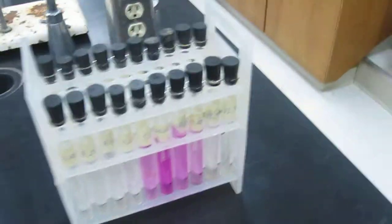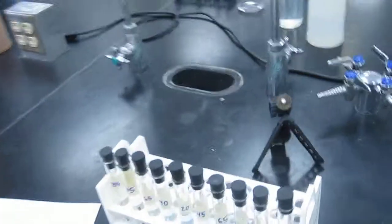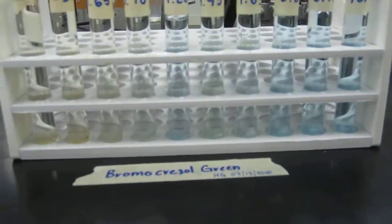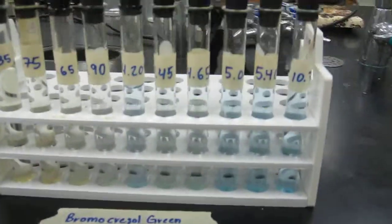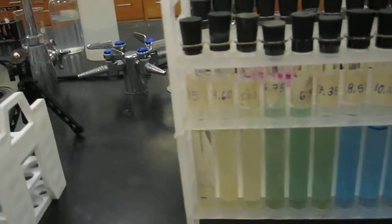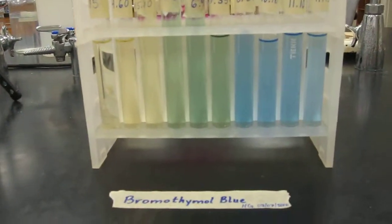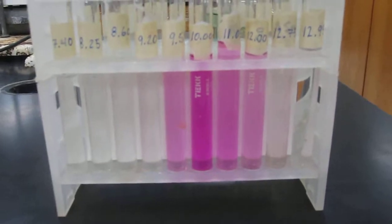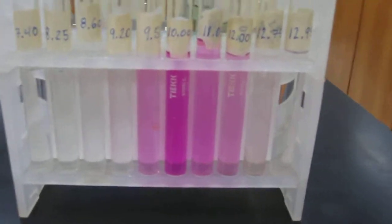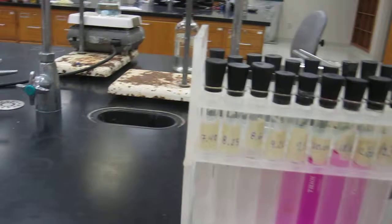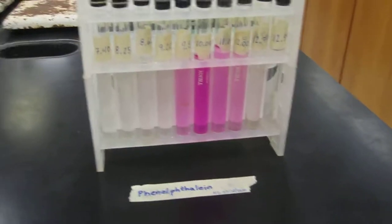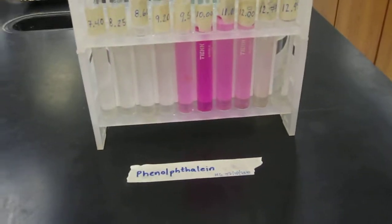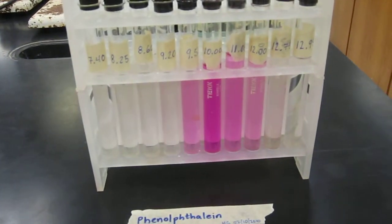So those are the three indicators you'll be using. Bromocresol green for the range 4 to 6, bromothymol blue for the range 6 to 8, and phenolphthalein with the range 8 to 10. And you'll just be comparing your test tube to the colors here, and if they match up, then you can say that it's about that pH.